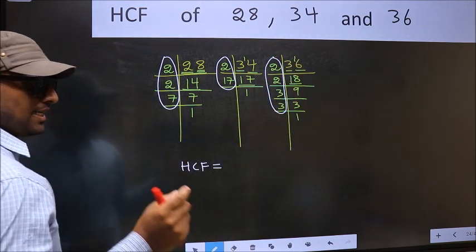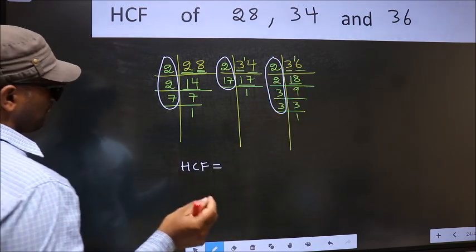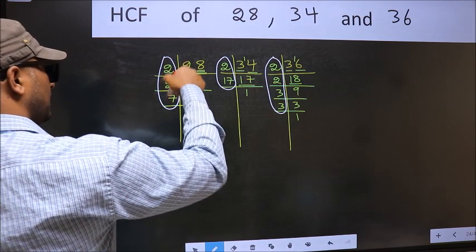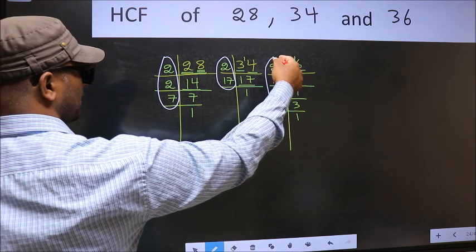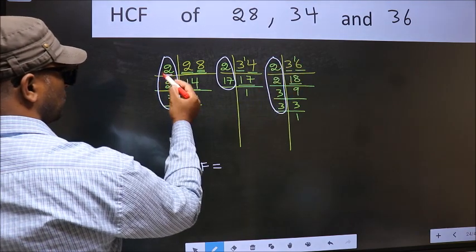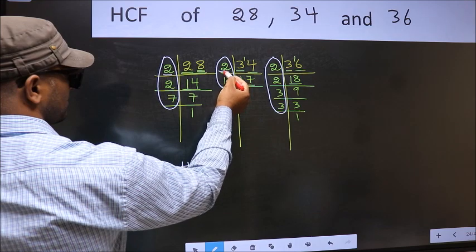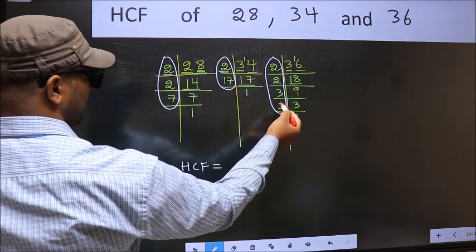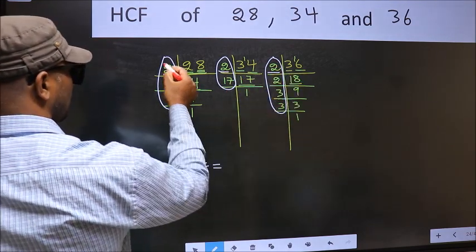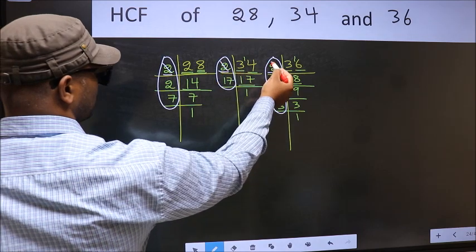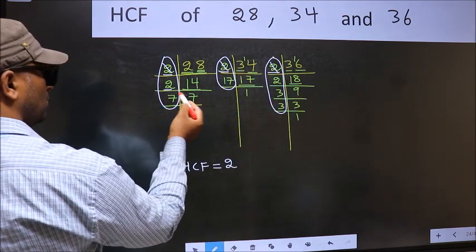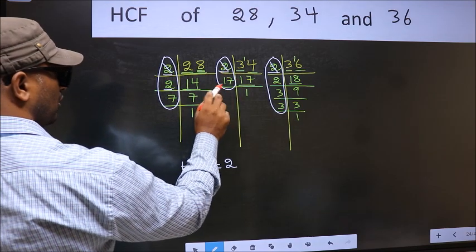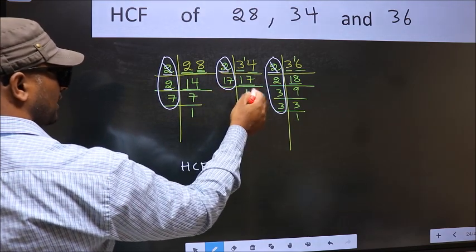So now let us find the numbers which should be present here, here and also here. Starting with the number 2. Do we have 2 here? Yes. So go to the next place. Do we have 2 here? Yes. So cut 2 right here. Next number 2. Do we have 2 here? No. So no need for us to check in the other place.